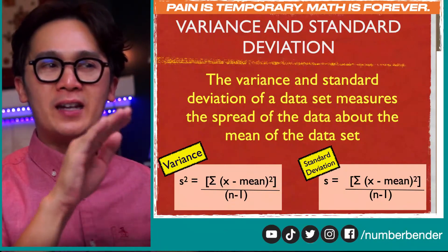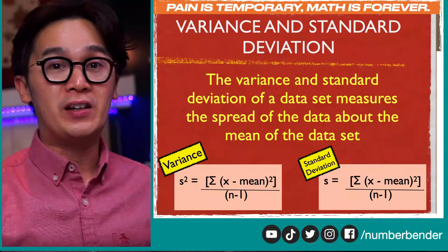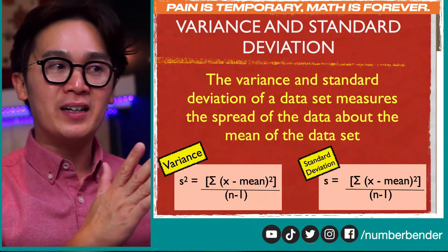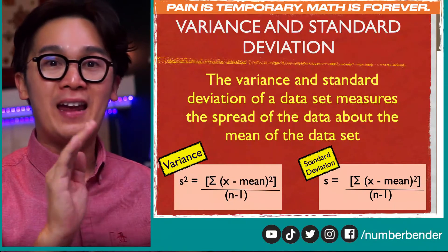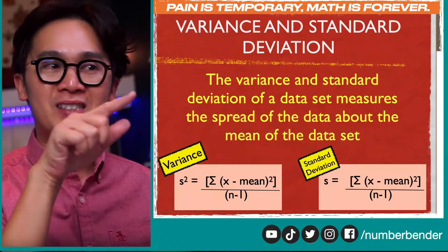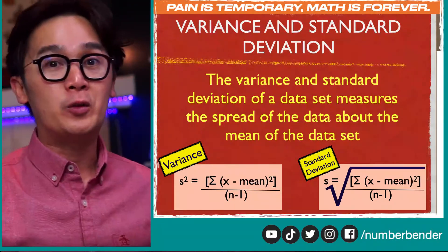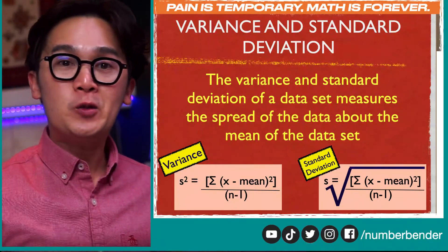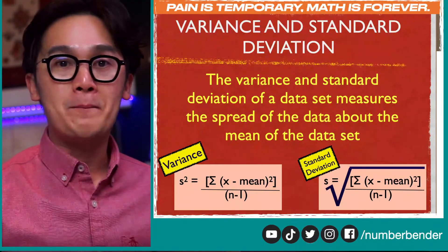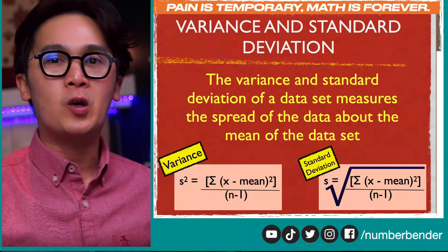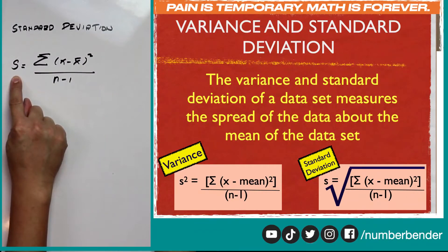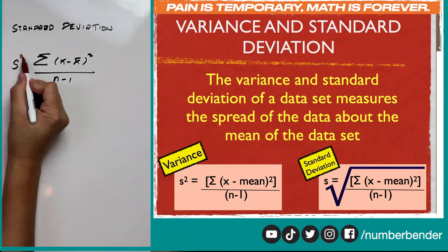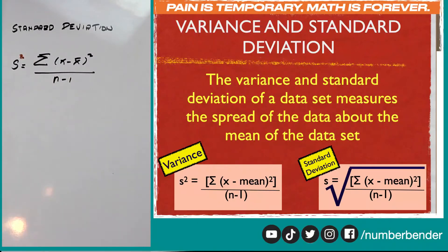The variance and the standard deviation formulas are quite the same. The variance, s-squared, equals the sum of the squared difference of x and the mean, all over n minus 1. The standard deviation, s, is simply the square root of the variance. These two formulas are both measuring the spread of the distribution, and we're going to be computing for the standard deviation today.